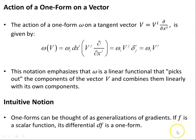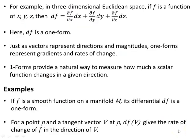If f is a scalar function, its differential df is a one-form. For example, in three-dimensional Euclidean space, if f is a function of x, y, z, then df = ∂f/∂x dx + ∂f/∂y dy + ∂f/∂z dz. Here, df is a one-form.